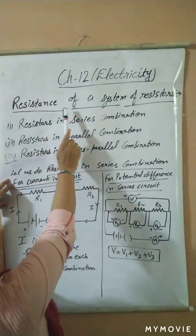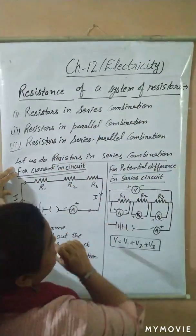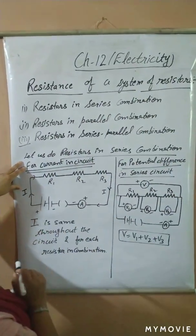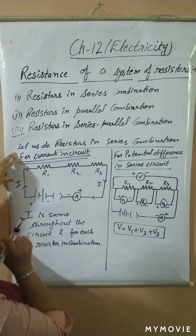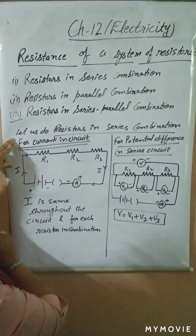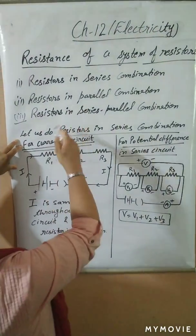Today's topic is resistance of a system of resistors. We have done earlier in Ohm's law that resistance is there — V is equal to IR, we have done.